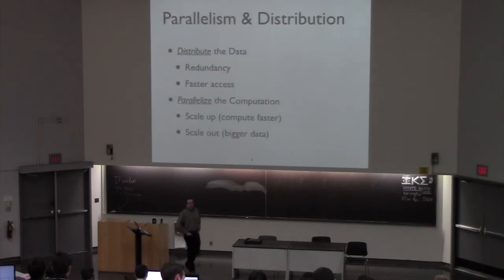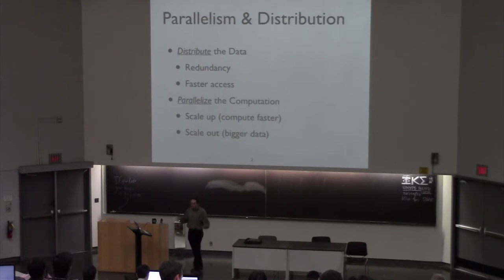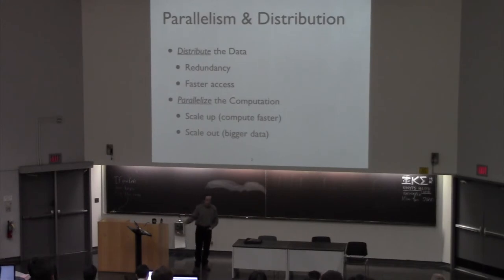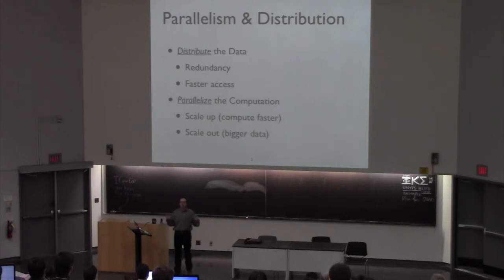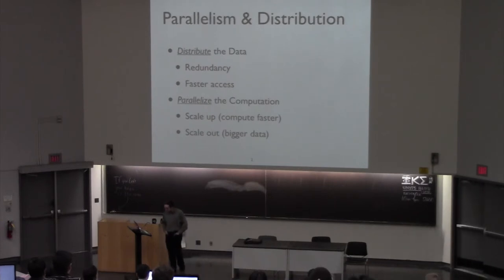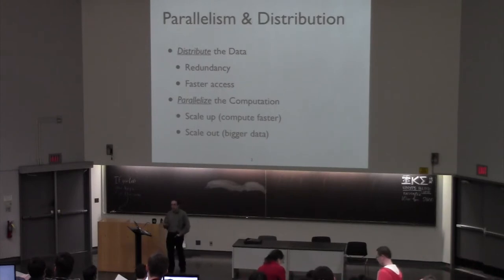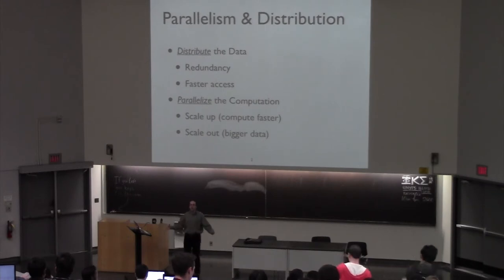Just a quick recap of terms. There are basically two kinds of things when you talk about distribution and parallelization. Parallelization basically means that we want to spread out the computation and run it faster by doing more things at the same time. And then there's a matter of distributing the data, which provides some level of redundancy and faster access or just being able to handle more data at once. The focus of today's lecture is going to be on parallelism — taking computations you normally do during query processing and running them in parallel.